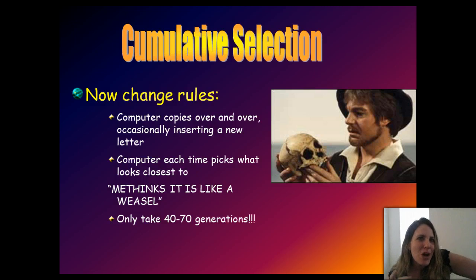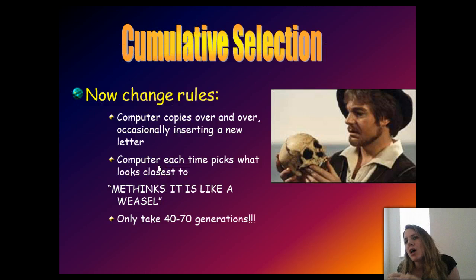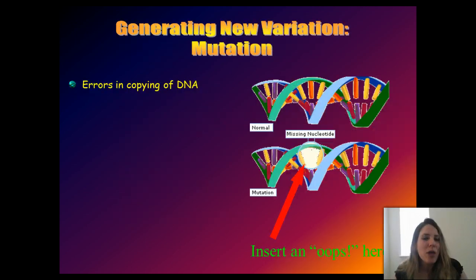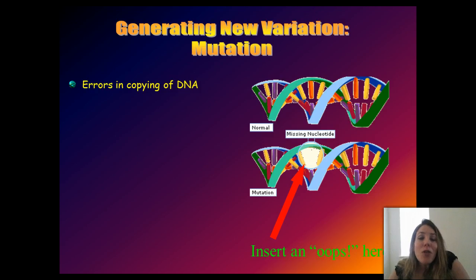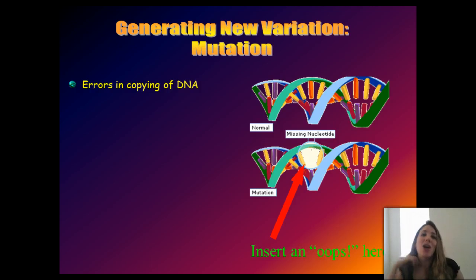This culling process — inserting one mutation, using that to replicate the next ones with mutations, and picking whichever looks most like the target — Dawkins called cumulative selection. The idea is that you're accumulating mutations over time due to them making an individual better adapted to that environment. That's cumulative selection, a quick illustration of how natural selection can lead to complex traits. Now let's go over the other mechanisms of microevolution: mutation, genetic drift, gene flow, and assortative mating.